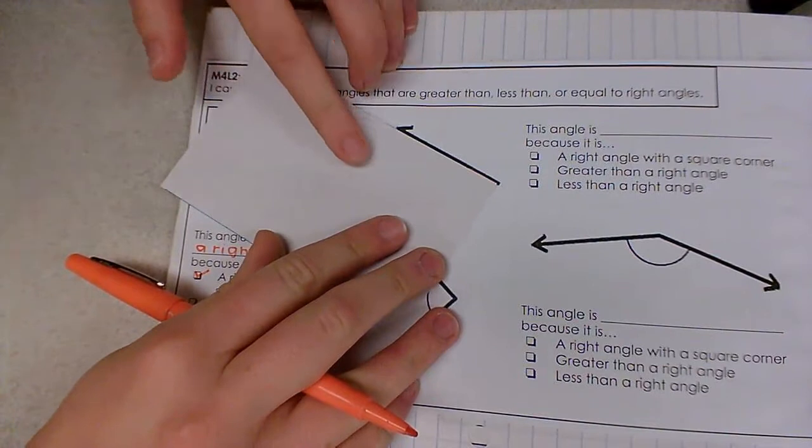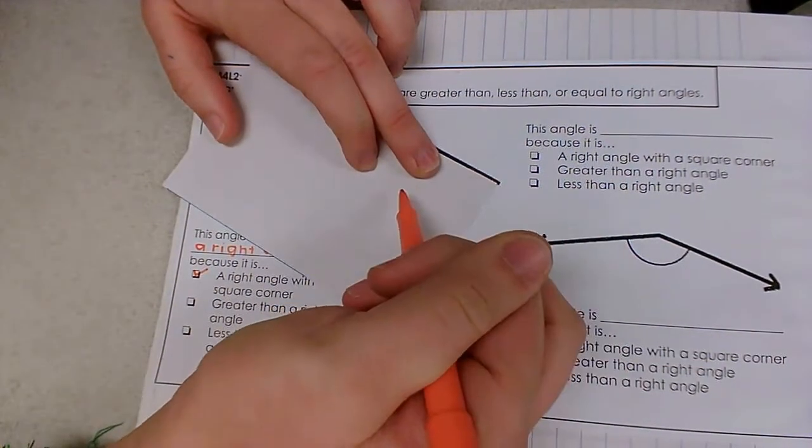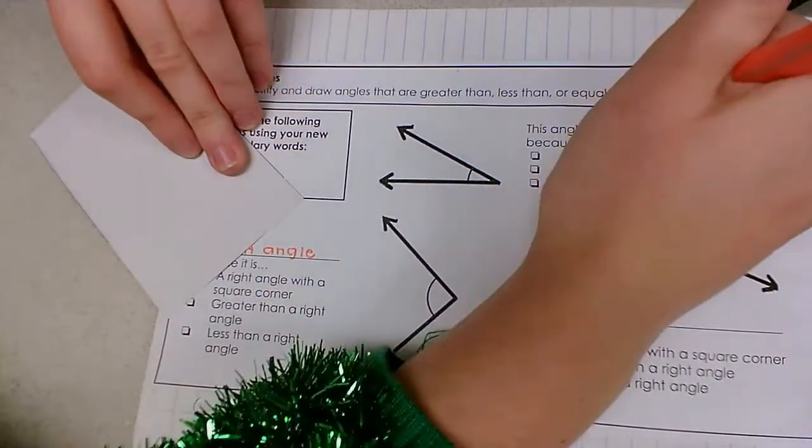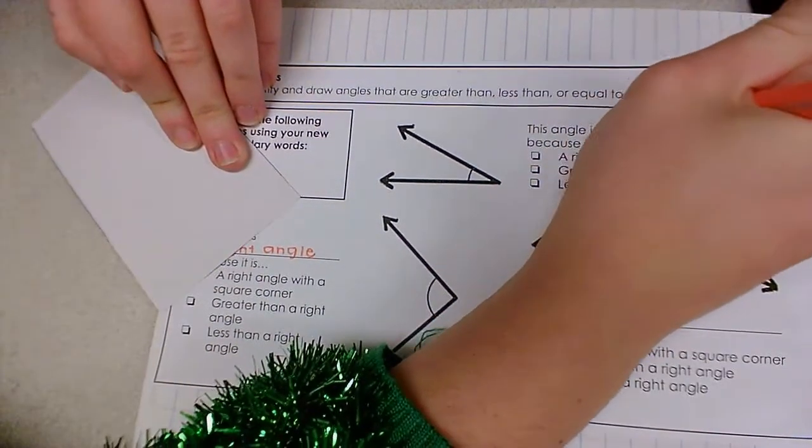When I line it up to my note card, I notice that I can't even see the line because it cuts into my note card. That's how small this angle is. This angle is acute.